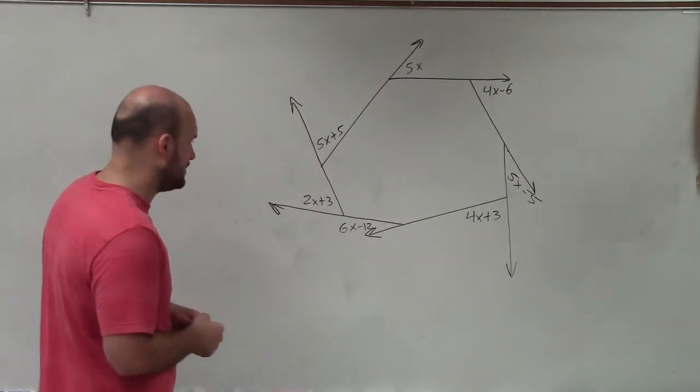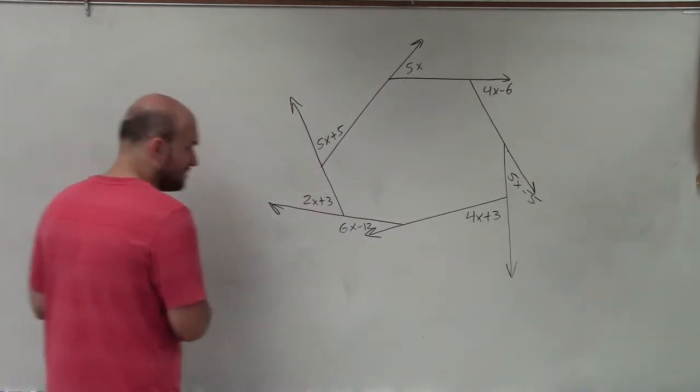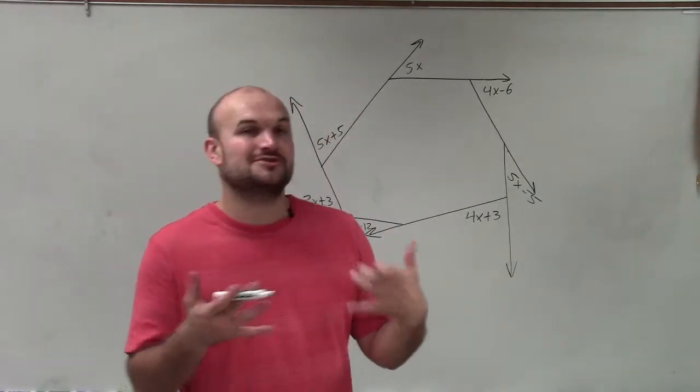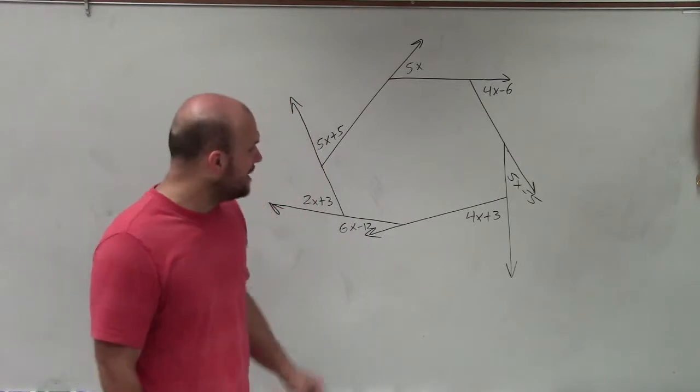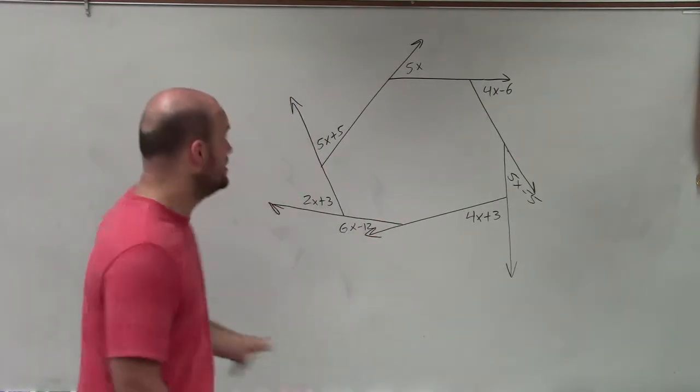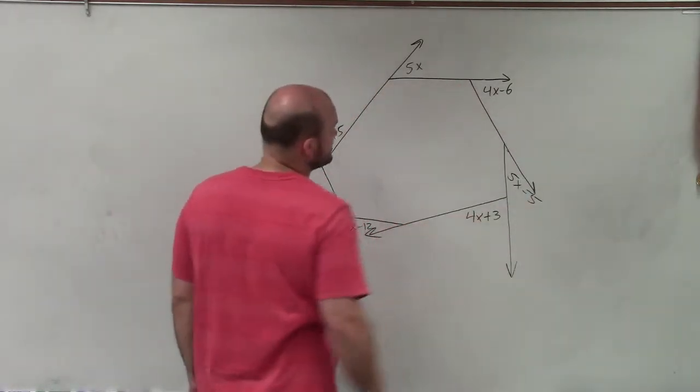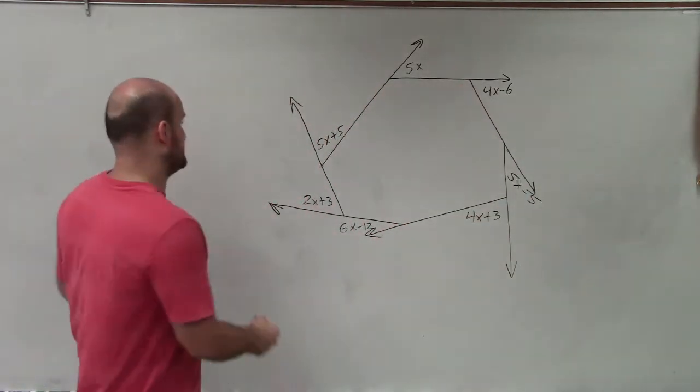So therefore what I'm going to do is write one big equation. I know it's a little bit extra work and a lot of students don't want to take that extra work, but it's going to be very helpful to make sure we don't make any mistakes. So I know that the sum—that means if I add all of these exterior angles—is only going to equal 360 degrees.